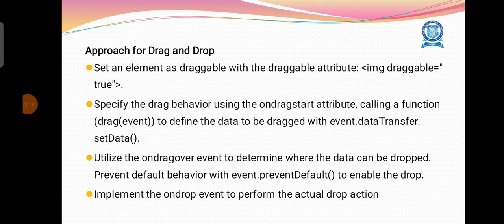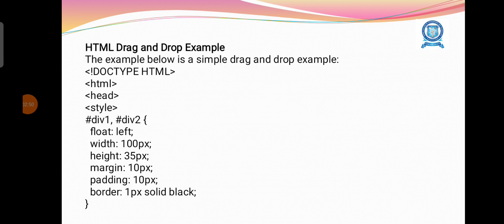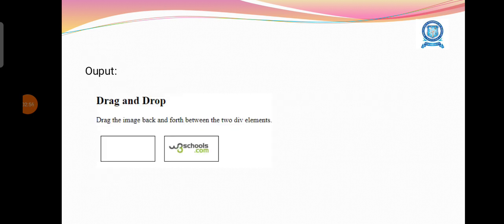To perform a drag and drop operation in HTML coding, we need to do the following: set an element as draggable with the draggable attribute — img draggable equal to true. We have to set the value true to the draggable attribute, specify the drag behavior using the ondragstart attribute by calling a function and define the data to be tracked with event.dataTransfer.setData. Utilize the ondragover event to determine whether the data can be dropped, and implement the ondrop event to perform the actual drop action.